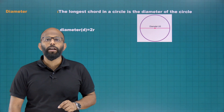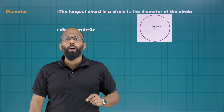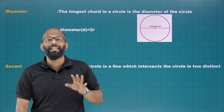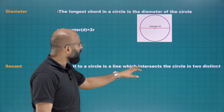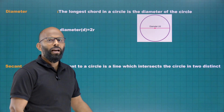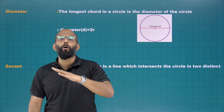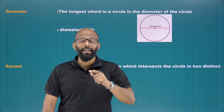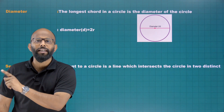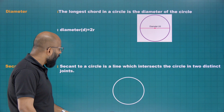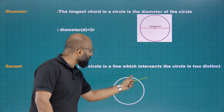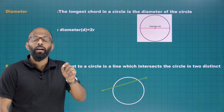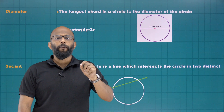Now we need to check what is a secant. A secant to a circle is a line which intersects a circle in two distinct points. It is a straight line which exactly intersects two points on the circle. That is called a secant.